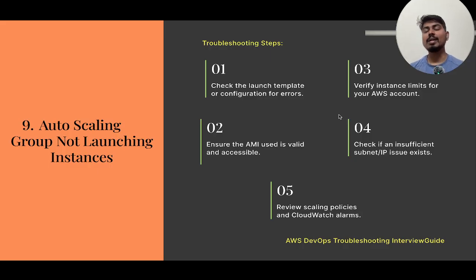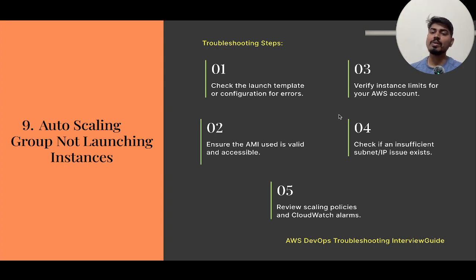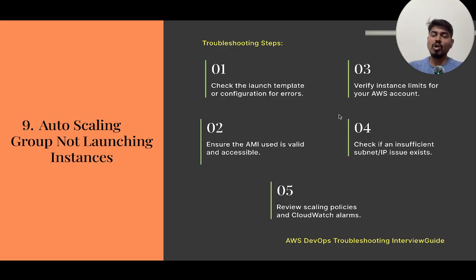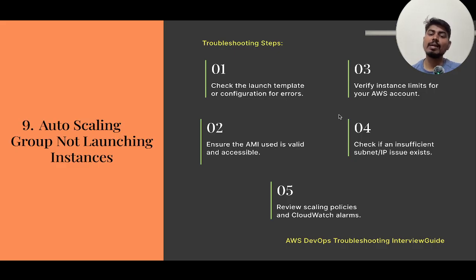Check if a subnet IP exhaustion issue exists. When creating a VPC we define a CIDR block, and each CIDR block has a limited number of IPs. If those IPs are exhausted, the Auto Scaling group cannot assign IPs to new instances and will throw an error. Finally, review the scaling policies and CloudWatch alarms, as errors in alarms can affect scaling decisions.